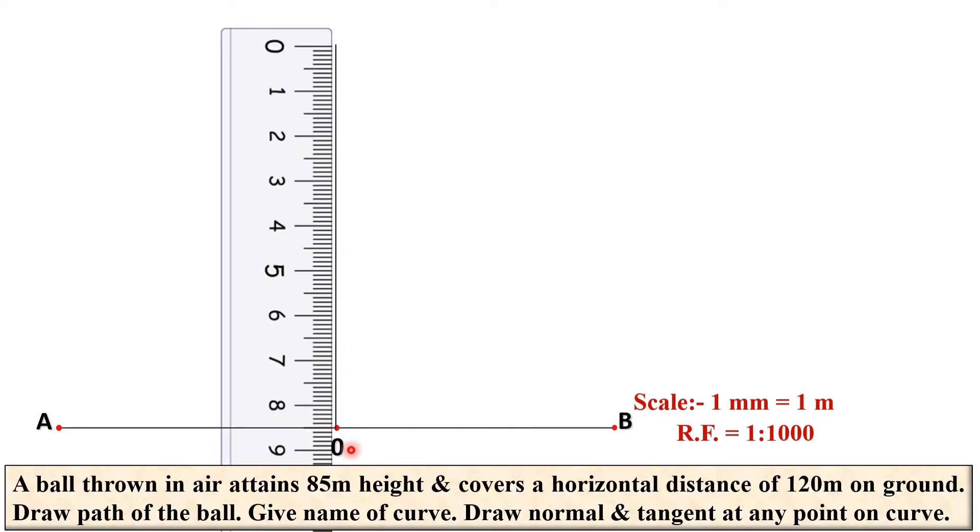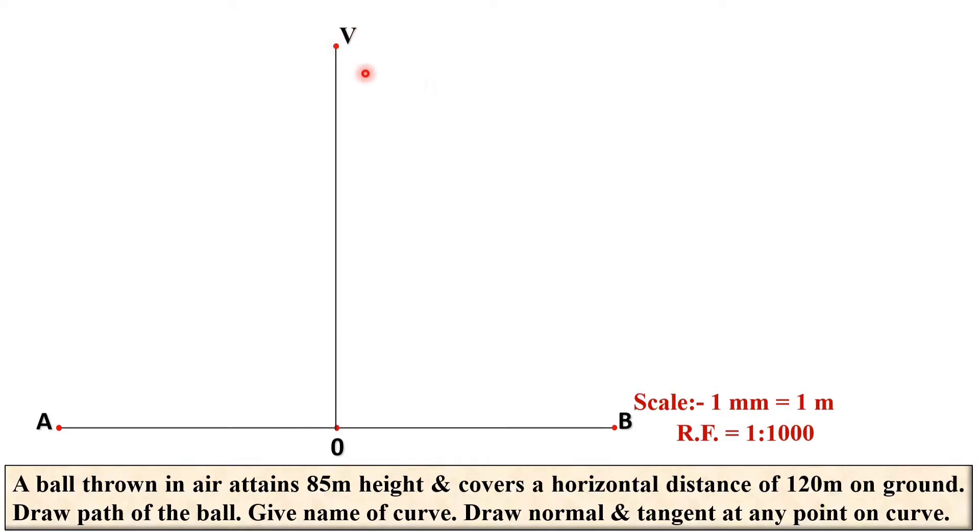Draw the vertical line passing through this 0 point and that is exactly equal to the height that is given to you as 85 meter. So it will be your 85 mm. Mark it over here and give the name as V. Now complete the rectangle with the help of the ruler and scale. That is why it is known as the rectangle method.